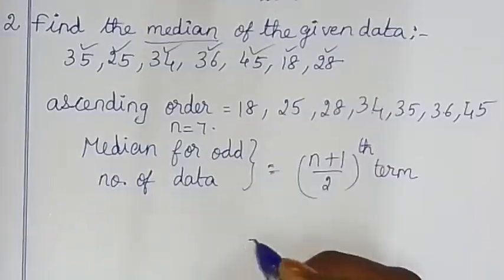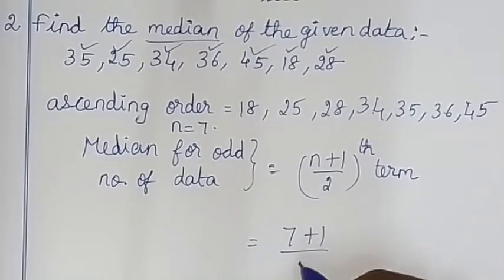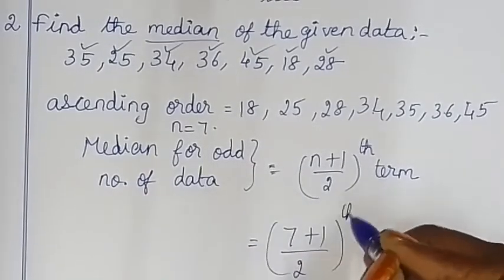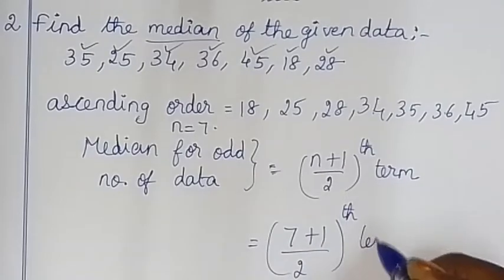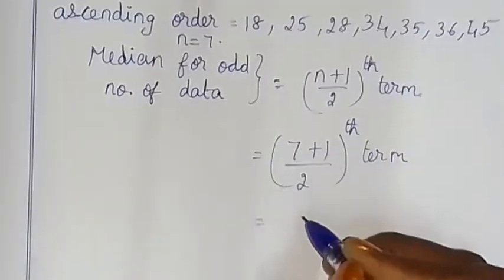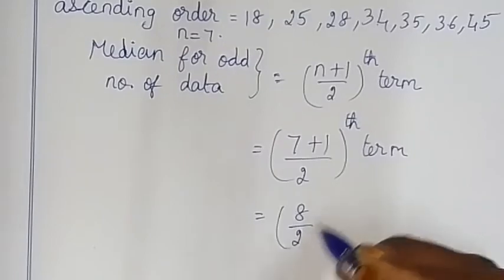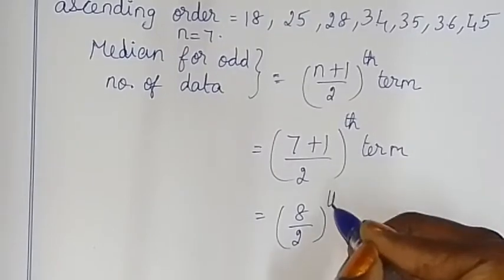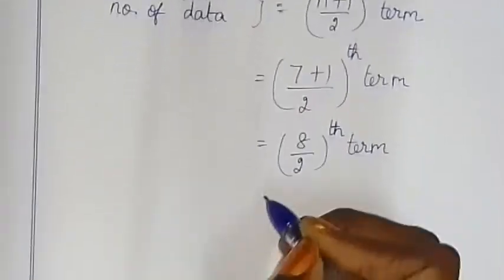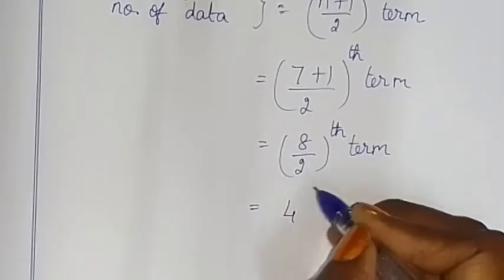N is 7, so this is equal to (7+1)/2 = 8/2 = 4th term.